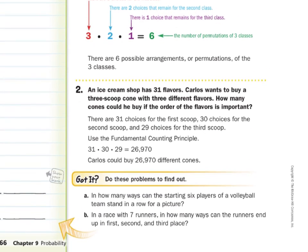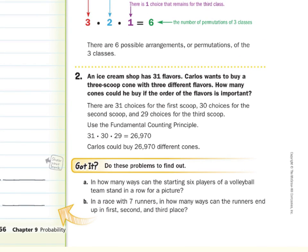In guided example two, an ice cream shop has 31 flavors. Carlos wants to buy a three scoop cone with three different flavors. How many cones could he buy if the order of the flavors is important? Well, there's 31 choices for that first scoop, 30 choices for the second scoop, and 29 choices for the third scoop. So if we multiplied 31 times 30 times 29, we would get 26,970 different cones for his triple scoop ice cream. Sounds good on a warm day like this.